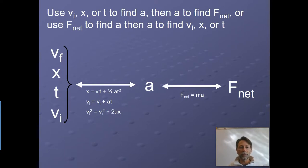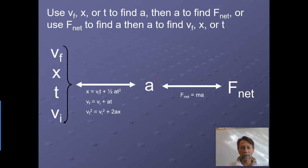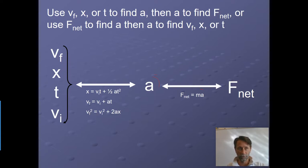In kinematics, we used five kinematic variables and three kinematic equations to describe motion using acceleration, velocity, position, and time. What connects us to this new chapter is acceleration again, from F equals ma. These problems work one of two ways: either you use kinematics to find acceleration and then find a net force or specific force, or you use forces to find acceleration and then use kinematics to find a kinematic variable.